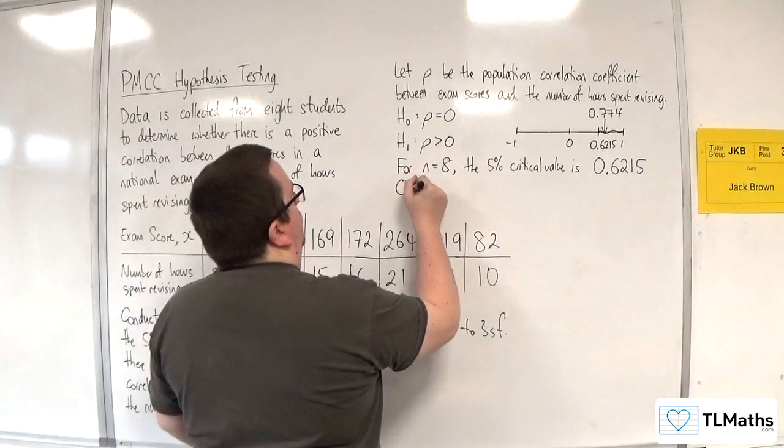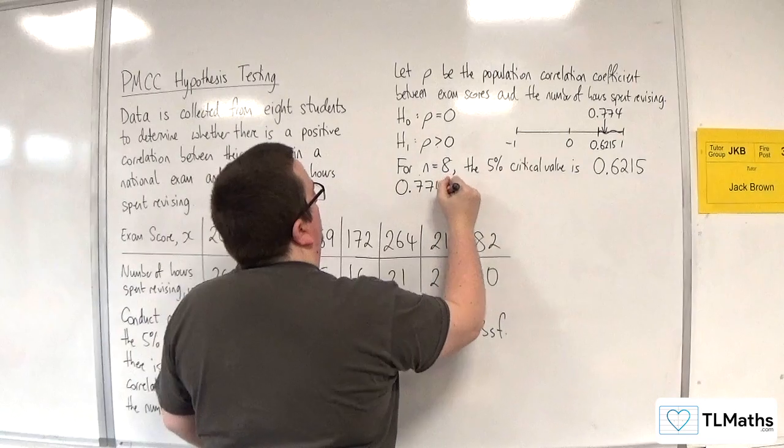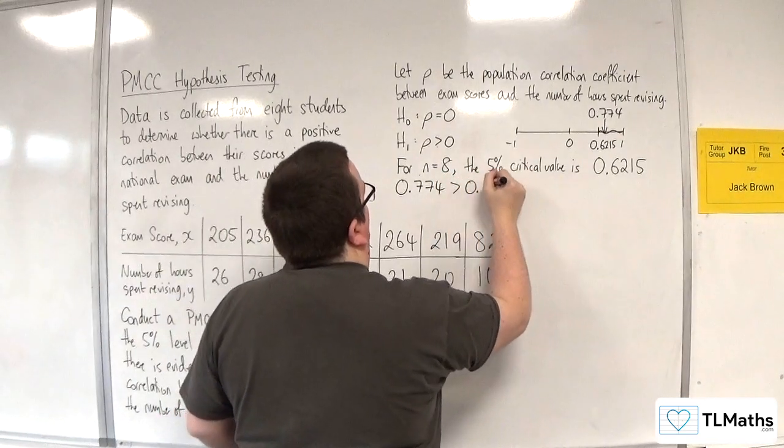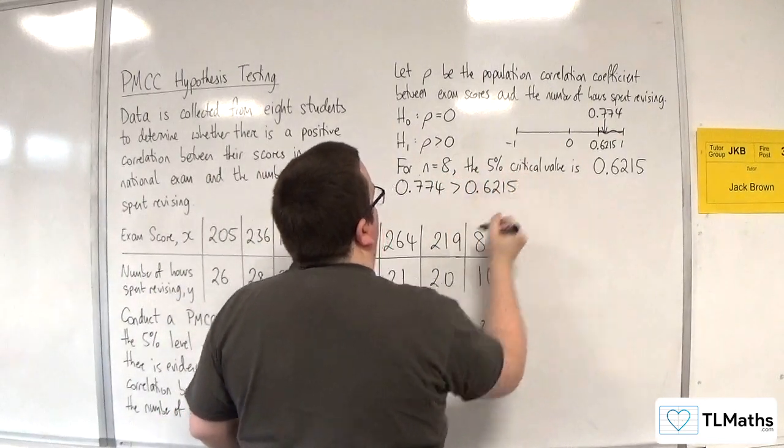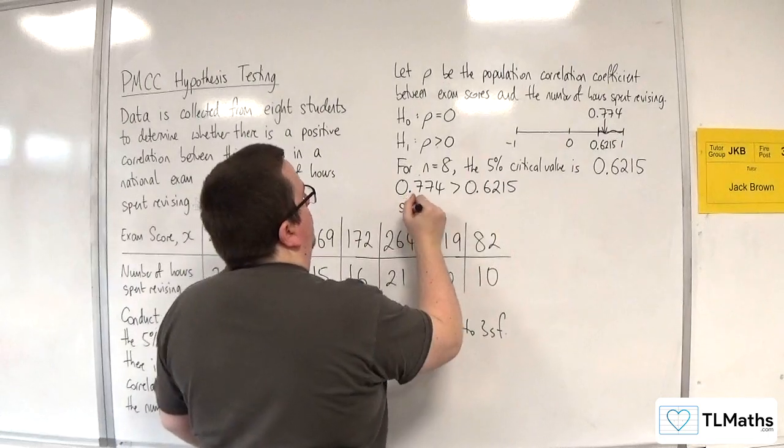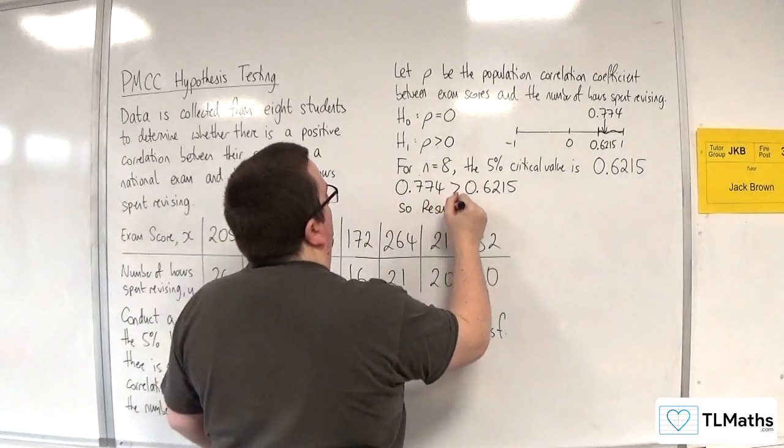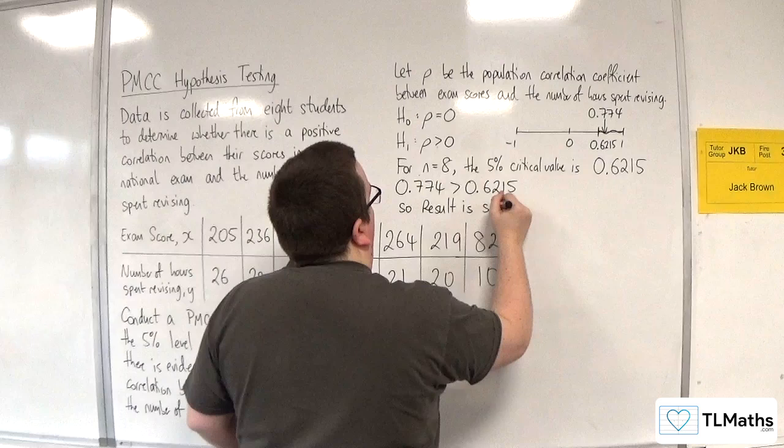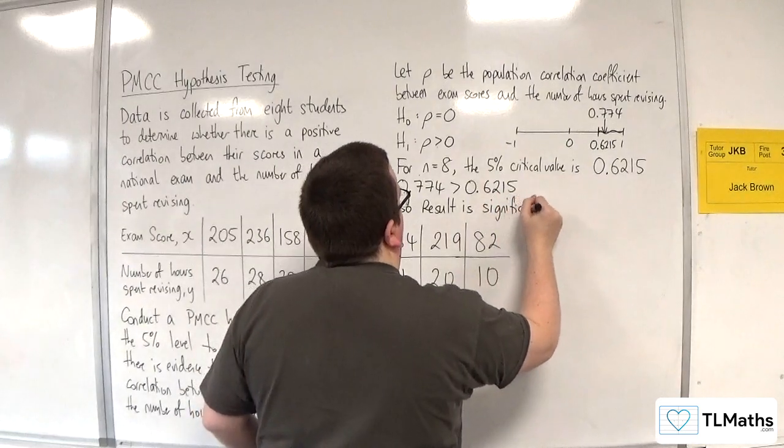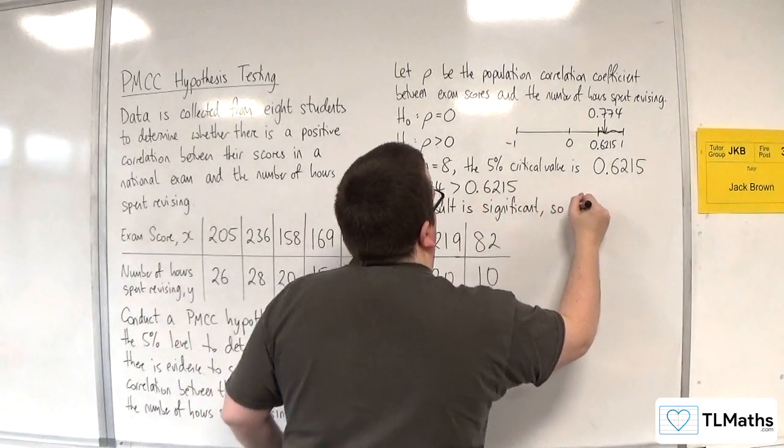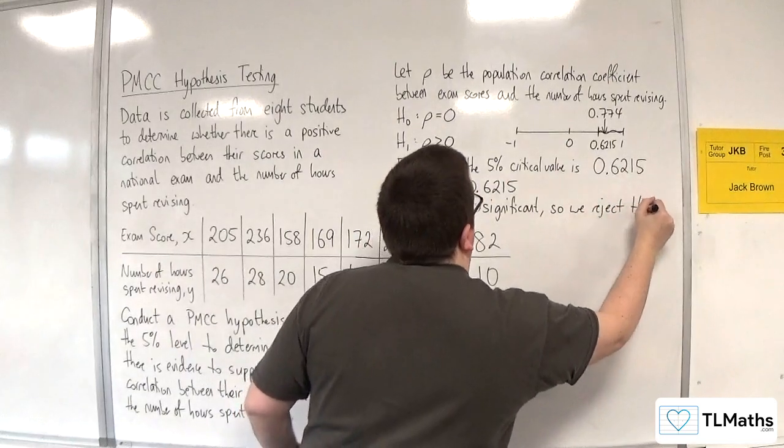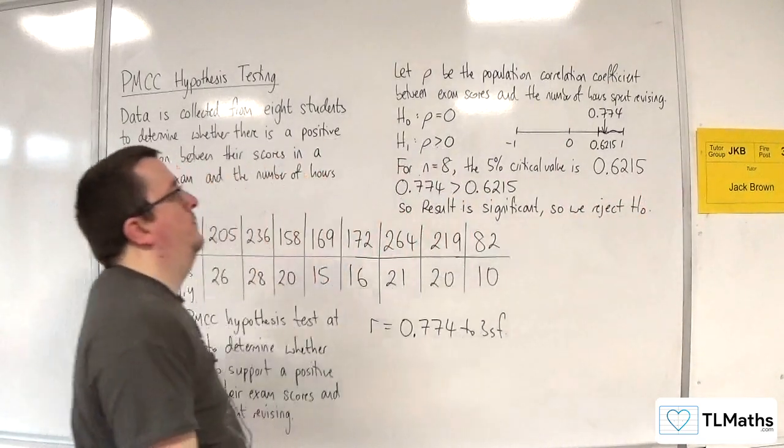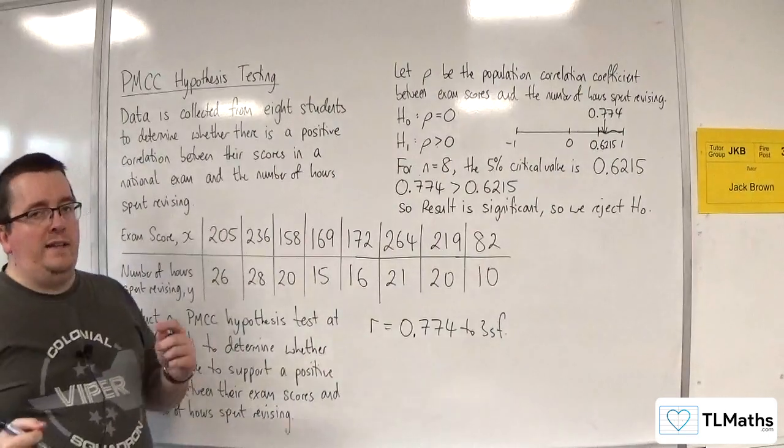So we can say that 0.774 is greater than 0.6215. So the result is significant. So we reject H0. Now we're not quite done.